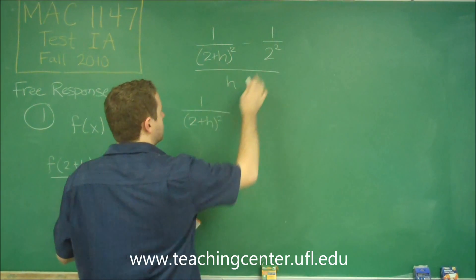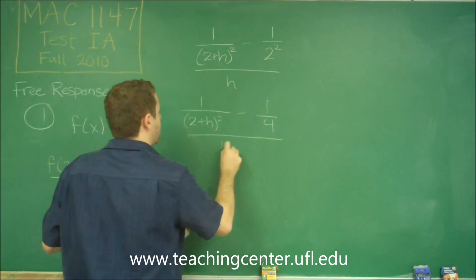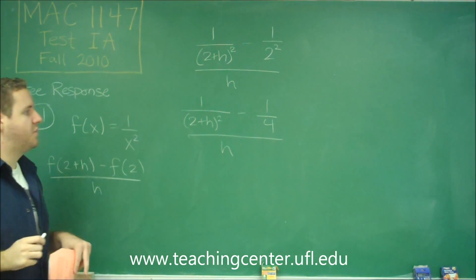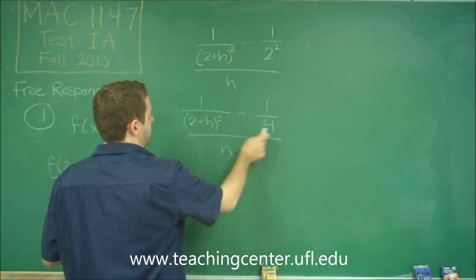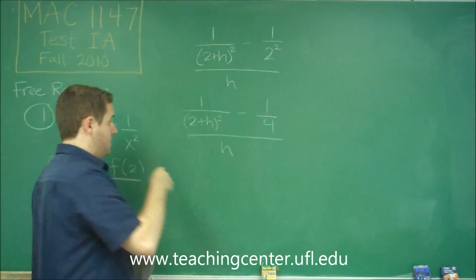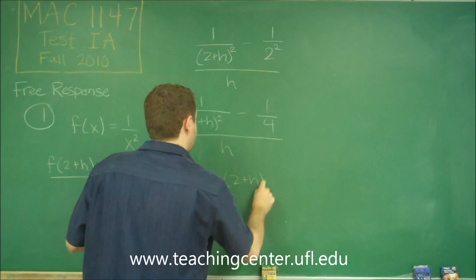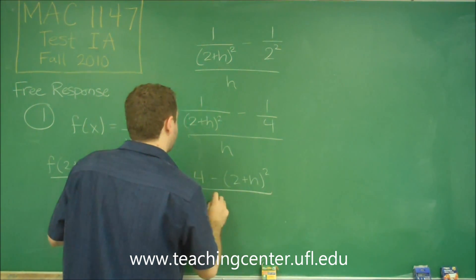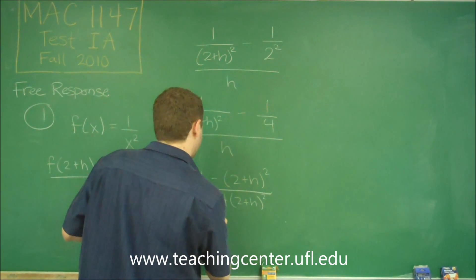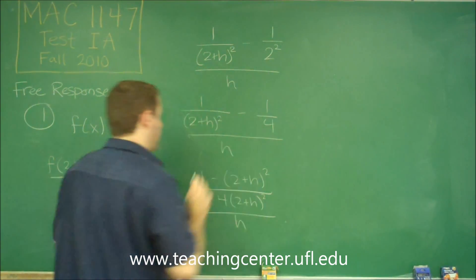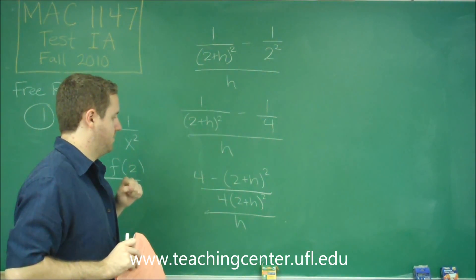This 1 over 2 squared we can just write as 1 fourth. To combine these two fractions, we need to get a common denominator. These have nothing in common, so we'll just multiply them. We'll get 4 minus (2 plus h) squared, all over 4 times (2 plus h) squared, all over h. This one needed a 4, this one needed a (2 plus h) squared, so we subtract them.